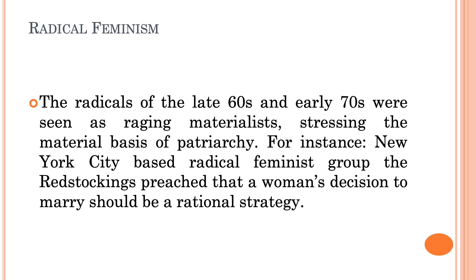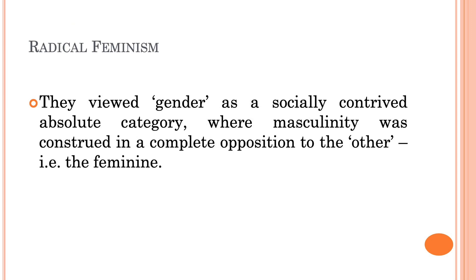Radical feminism, prominent mostly in the 1960s and 70s, was more towards stressing the materialistic basis of patriarchy. For example, one of the ideas they strongly opposed was that the decision to marry should be a rational strategy rather than surrendering to a false sentiment. Radical feminism viewed gender as a socially contrived absolute category where masculinity was construed in complete opposition to the feminine.